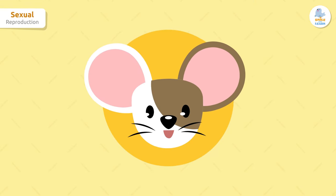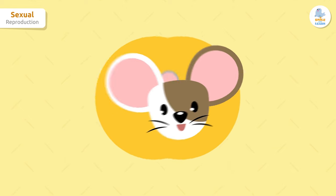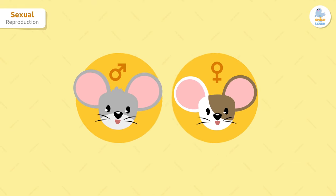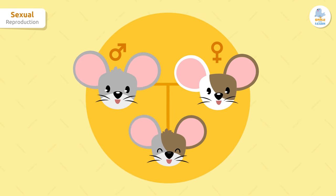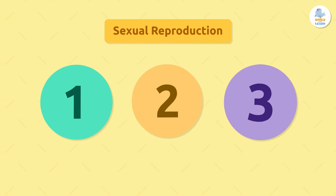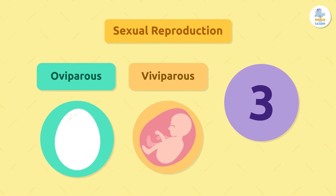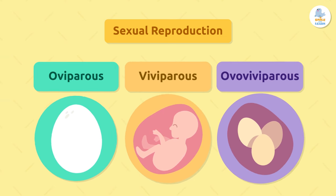Sexual reproduction is most common in animals. It involves two parents — a male and a female — and their young will look like them. We can classify animals into three groups according to their type of sexual reproduction: oviparous, viviparous, and ovoviviparous. Let's discover them!